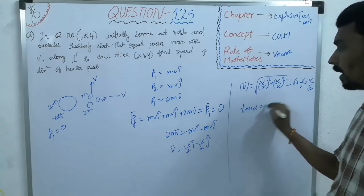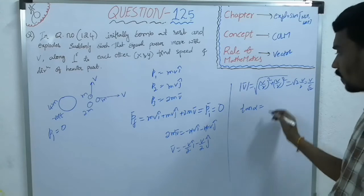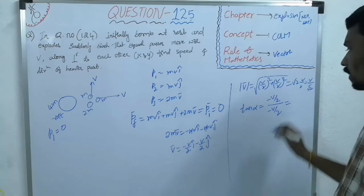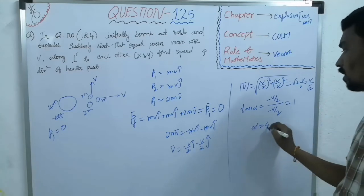the direction, the angle made with x axis, tan alpha is, minus v by 2, by minus v by 2, how much? 1, alpha is 45. But,